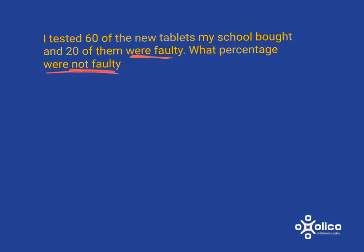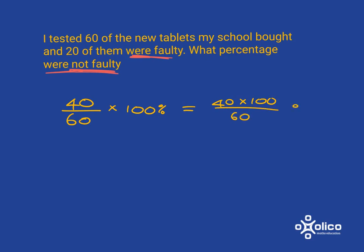To work out the percentage that were not faulty, we take 40 — which is the number that were not faulty — out of 60, and turn that into a percentage in our usual way. It's 40 multiplied by 100 over 60. After cancelling, we need to work out 200 divided by 3. 3 goes into 20 six times remainder 2, and this repeats, so we get 66.6666... percent of the tablets were not faulty.